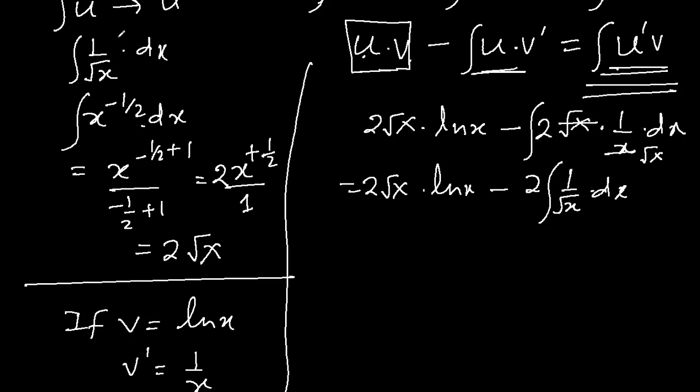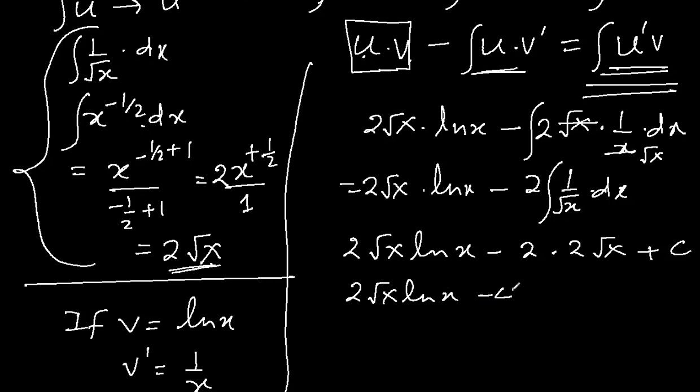And we already integrated 1 over square root x in this, where we got 2 square root x. So it becomes 2 square root x ln x minus 2 times, and now again integration is 2 square root x. And obviously we have to write, finally, c. So it becomes 2 square root x, ln x minus 4 square root x plus c.